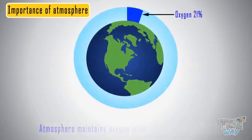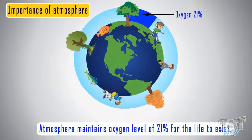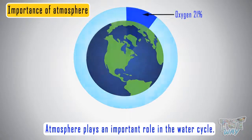Oxygen levels of 21% are maintained by the atmosphere which is just apt for life to survive. The atmosphere plays an important role in water cycle too.